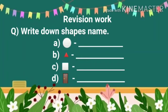A. Which shape is this? Circle. C-I-R-C-L-E. Circle. B. Which shape is this? Triangle. T-R-I-A-N-G-L-E. Triangle.